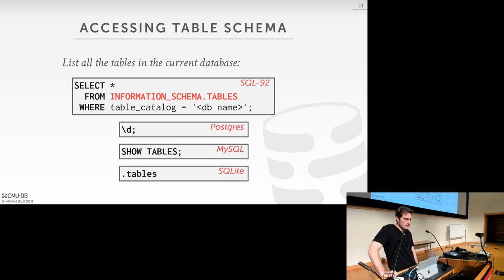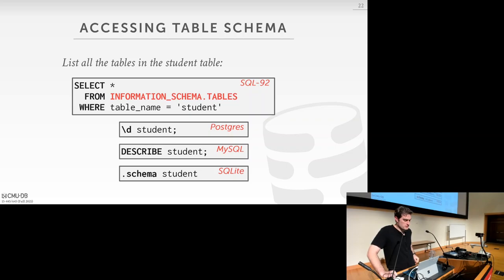To list all tables in the current database, the SQL-92 compliant query is: SELECT * FROM information_schema.tables WHERE table_catalog = [database name]. Shortcuts vary by system: in Postgres it's backslash-d, MySQL uses SHOW TABLES, and SQLite uses .tables. To get the schema for an individual table like 'student', you SELECT * FROM information_schema.tables WHERE table_name = 'student', with equivalent shortcuts in each system.